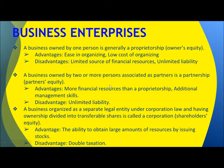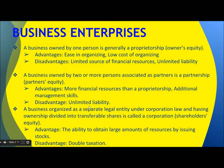The second kind is a partnership — a business owned by two or more persons associated as partners, with partner's equity. The advantages are more financial resources than a proprietorship and additional management skills. The disadvantage is unlimited liability.